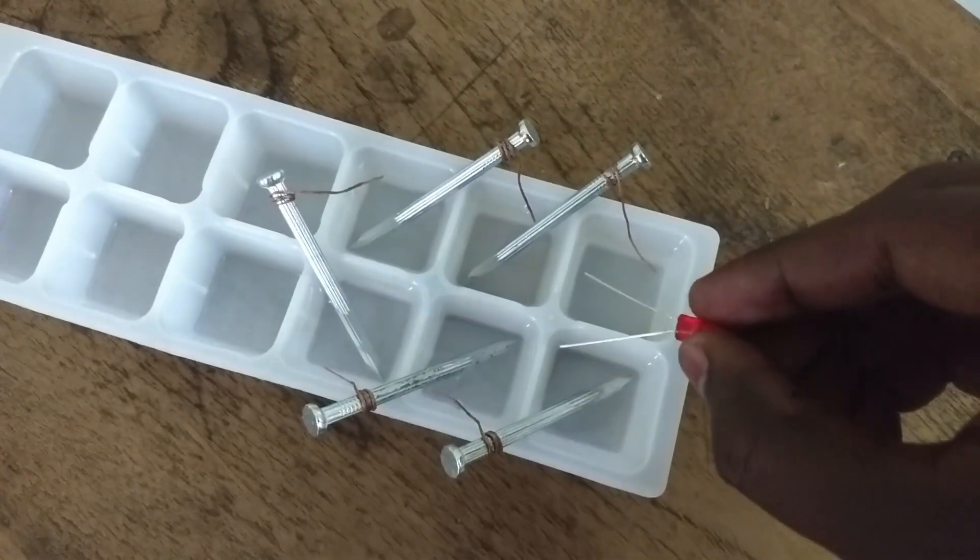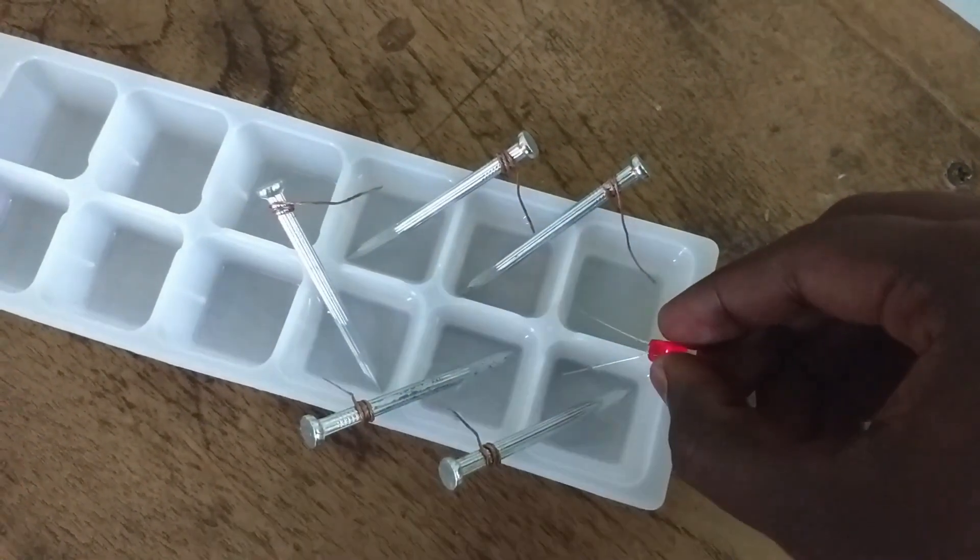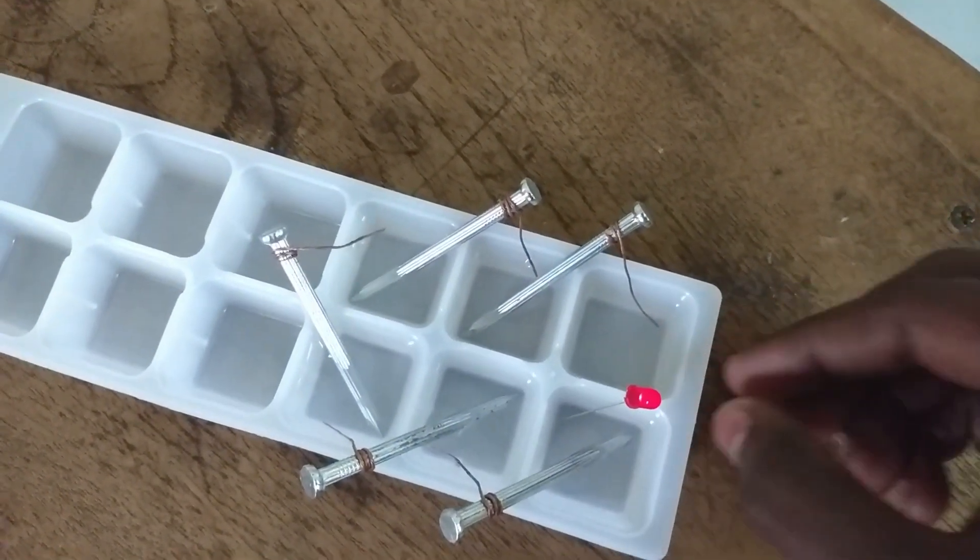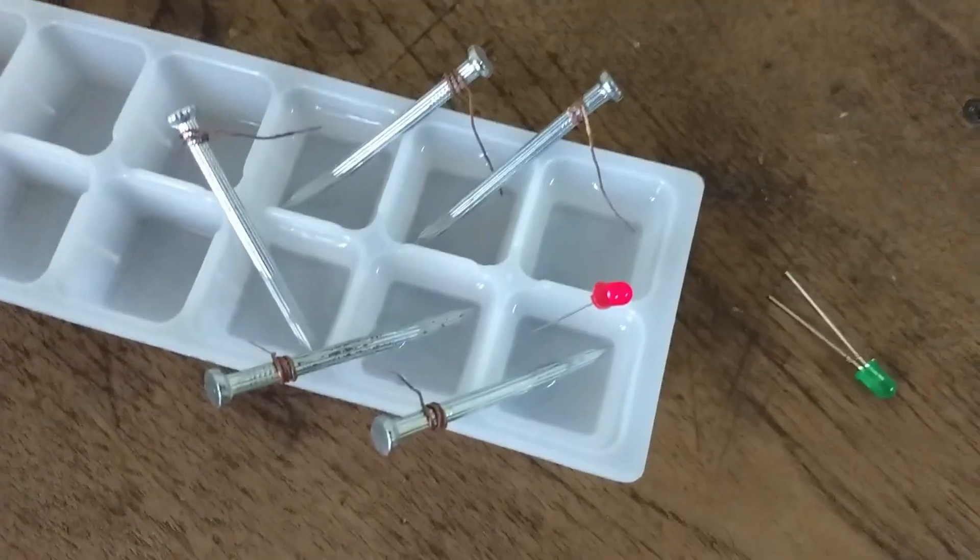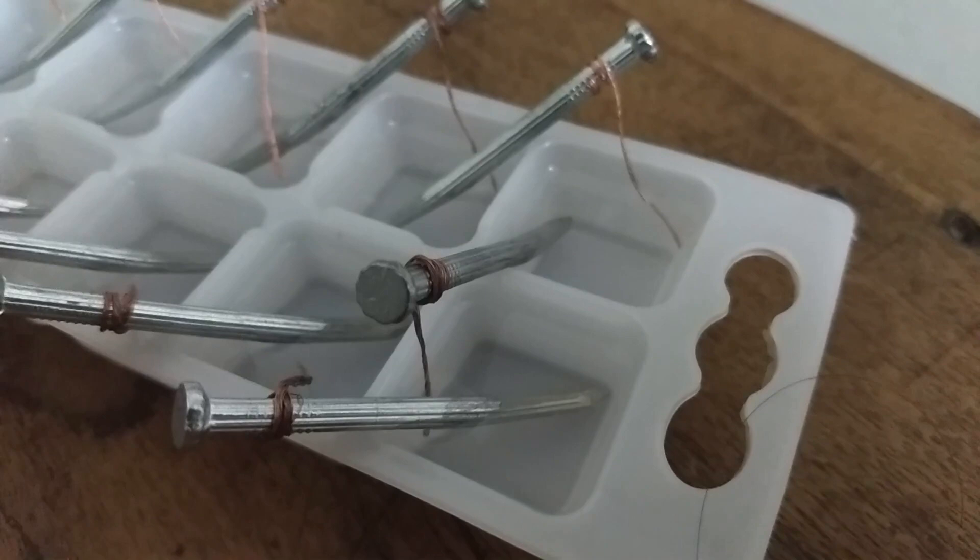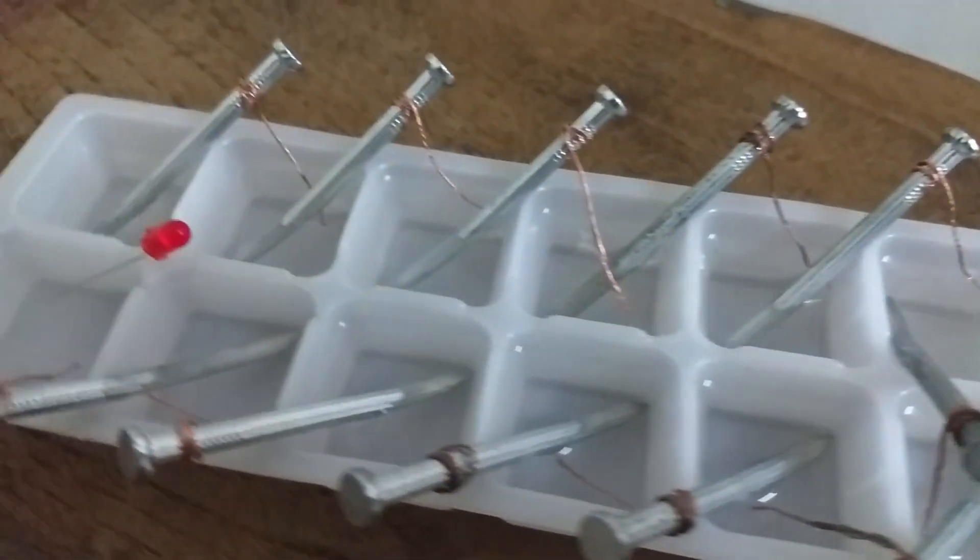Let's connect the LED. One terminal connects to a nail compartment, and the other terminal connects to a copper compartment. When we connect the LED terminals, there is enough power and we are able to light it up.